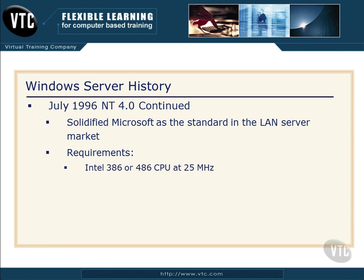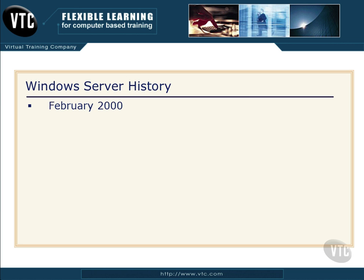Notice the requirements for an NT 4 server in July 1996: an Intel 386 or 486 processor running at 25 megahertz — not gigahertz, megahertz — and a minimum of 16 megabytes of memory, which was quite pricey back then. People began to migrate away from Novell because a perception grew that everybody else was going to Microsoft. In February 2000, Windows Server 2000 was released, and this was big.